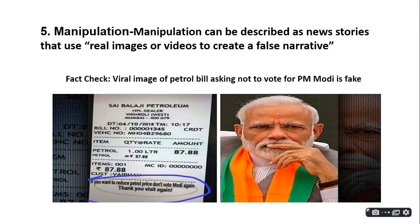The next type is manipulation. Manipulation can be described as a news story that uses real images or video to create a false narrative. For example, a viral image of a petrol bill was fact-checked — the bill contained a message saying 'If you want to reduce petrol prices, don't vote for Modi again. Thank you, visit again.' This type of message was verified as fake.